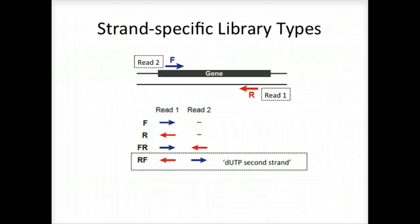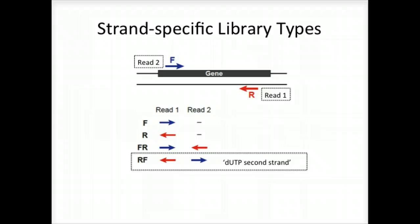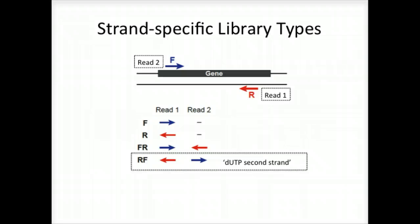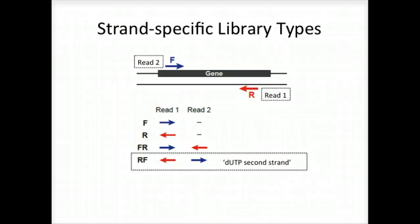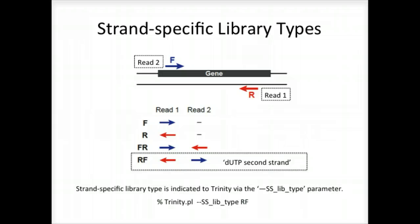Our favored approach for strand-specific RNA-seq generates fragment sequences such that read one matches the reverse complement and read two matches the sense strand. This corresponds to what we call the RF library type, with the R indicating the first read must be reverse complemented by Trinity, and the F indicating that read two is already in the forward or sense strand orientation. We indicate this to Trinity on the command line by using the --ss_lib_type parameter and specifying RF as the value.